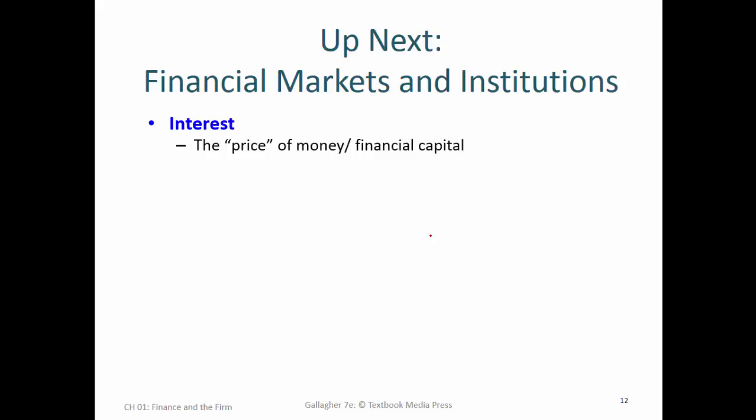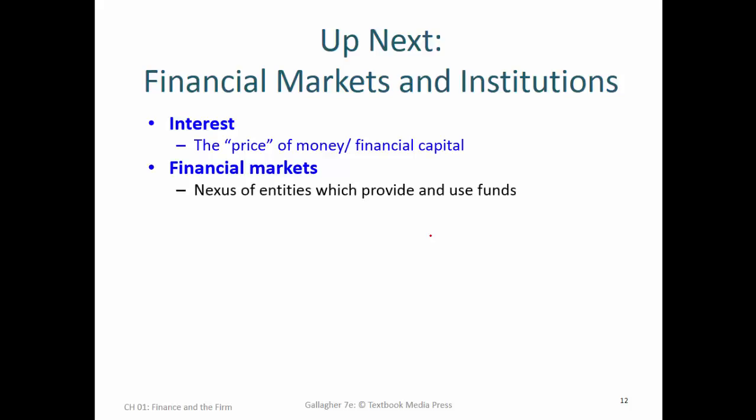Interest is the price of money — the price of financial capital — the price paid if you want to borrow it, and the price you earn if you're a saver or investor. We'll cover the fundamental concept of interest and factors that make interest rates go up and down. Financial markets are a constellation of different entities that provide and use funds: households earn income and save, banks make loans, corporations borrow and issue stocks and bonds. Those interactions create financial markets, which produce interest rates, rates of return, and stock market valuations.